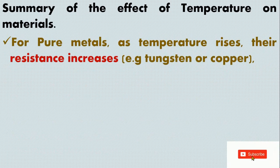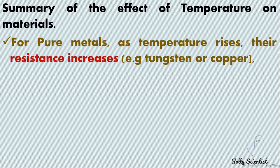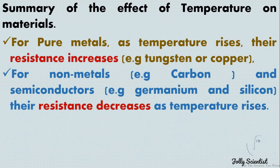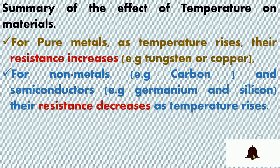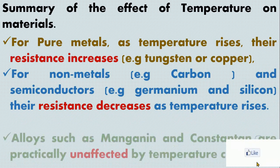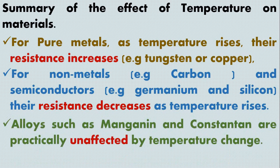A summary of the effect of temperature on materials. For pure metals, as temperature rises, resistance rises — examples include tungsten and copper. For non-metals such as carbon, and semiconductors like germanium and silicon, resistance decreases as temperature rises. And for alloys such as manganin and constantan, resistance is practically unaffected by temperature change.